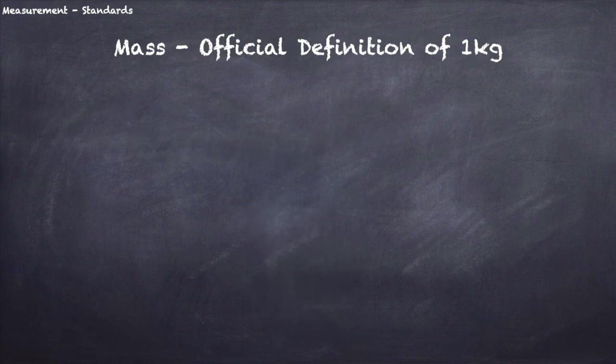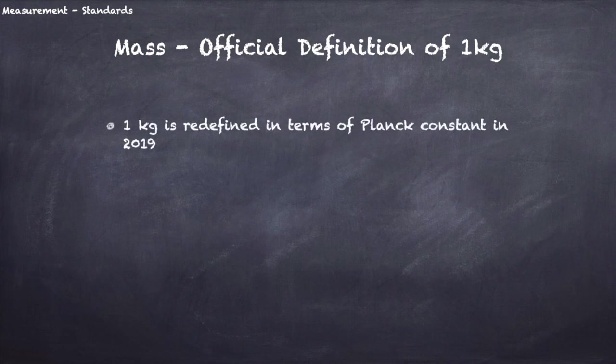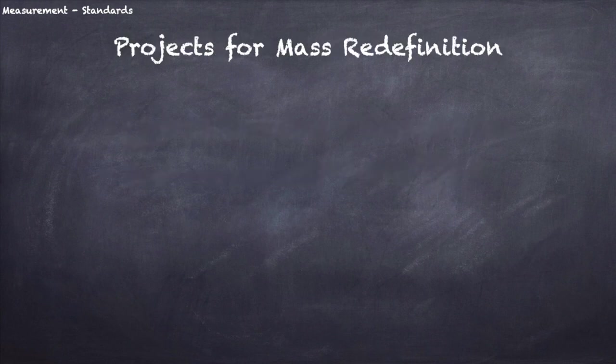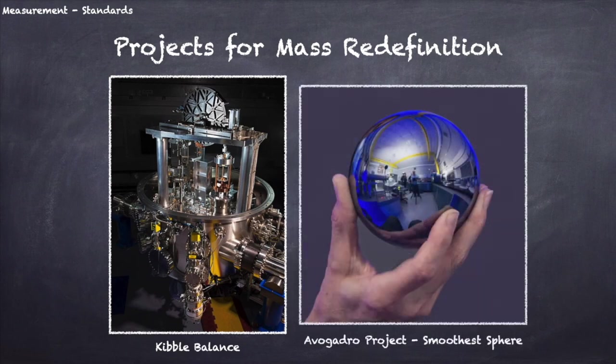Of course, that would have been too easy. 1 kilogram was finally redefined in 2019 in terms of Planck constant. Planck constant is also a fundamental constant like the speed of light. Physicists have all agreed that this is the value of Planck constant. See the units kg in the expression? That's why the Planck constant can help define the standard kilogram. The exact wording of the definition hasn't come out yet as of this recording. To make this redefinition work, we needed to measure Planck constant very precisely. This was done in Kibble balance project and Avogadro project.